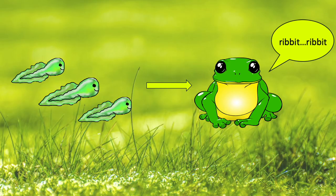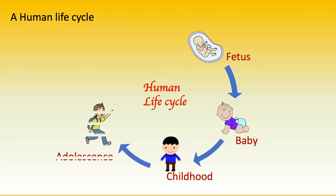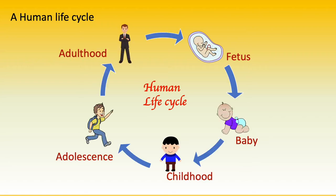Let's look at some different types of life cycles. A human life cycle begins with the fetus in the mother's womb. The baby is then born and grows, reaching its childhood stage. Gradually it changes into an adolescent, then develops and becomes more mature as an adult. The adults look for a mate to begin the life cycle all over again with new babies.